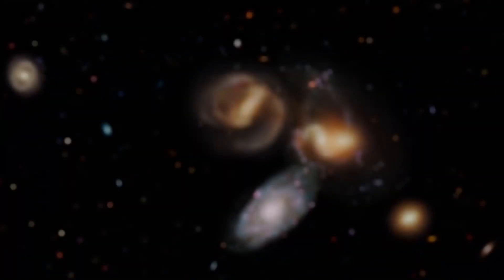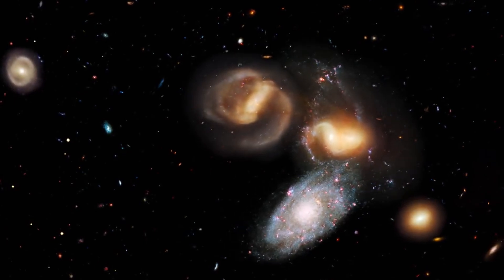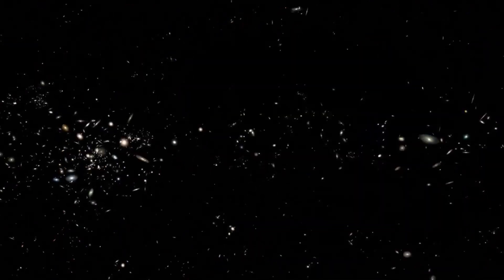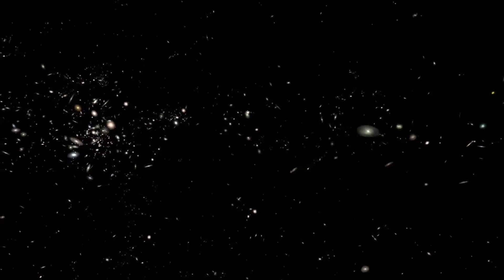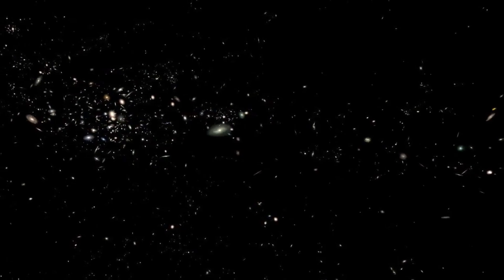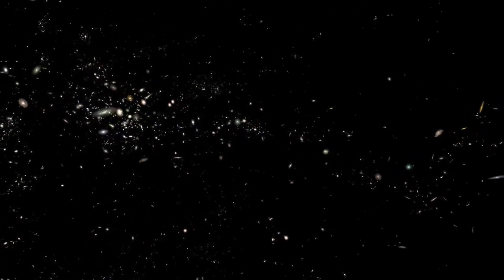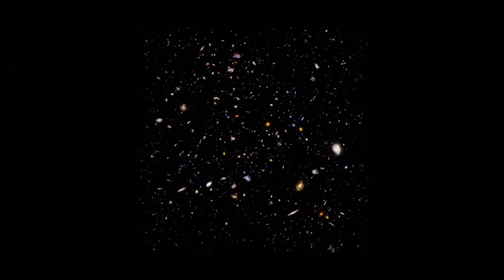Groups of them are bound into clusters of galaxies and these into superclusters. The superclusters are arranged in immense sheets stretching across the universe, interspersed with dark voids and lending the whole a kind of spider web structure.